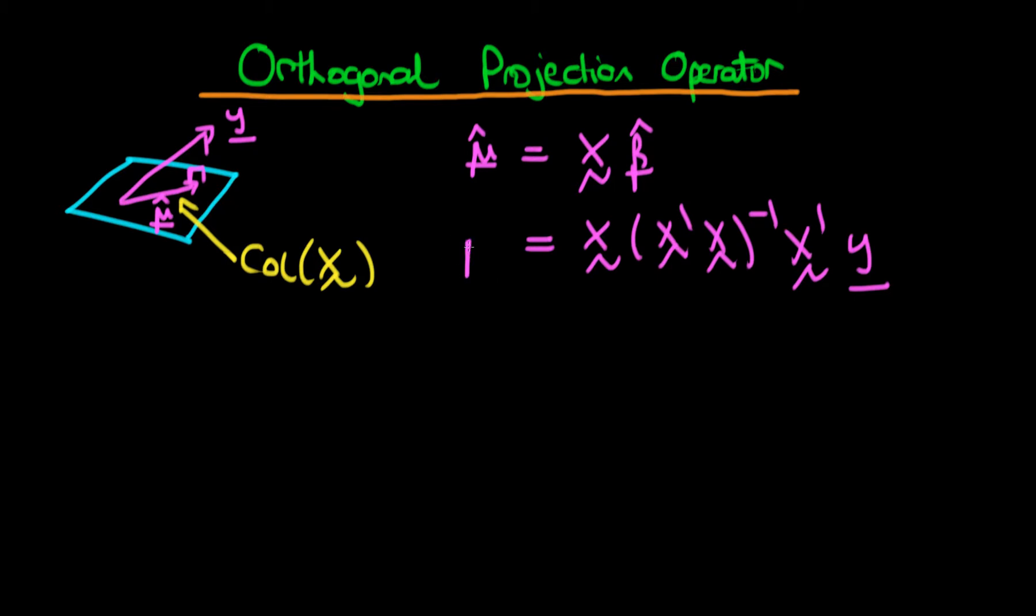Then we have an expression for mu hat in terms of y. Sense would seem to suggest that this term which I'm underlining here really is the orthogonal projection operator which transforms y or projects y onto the column space of X.